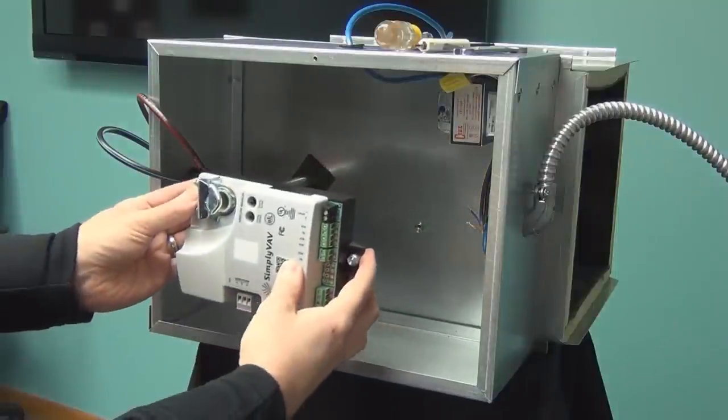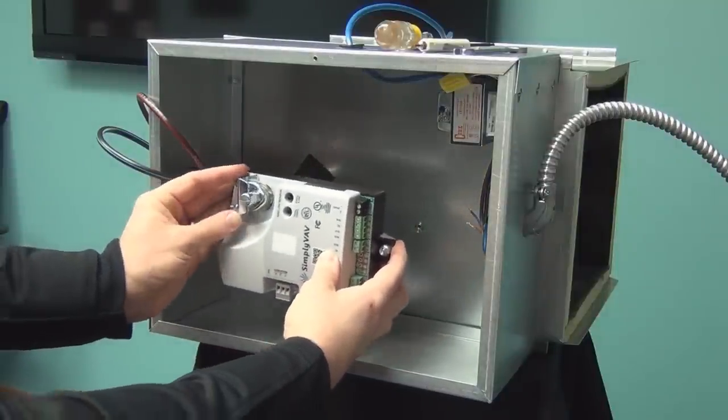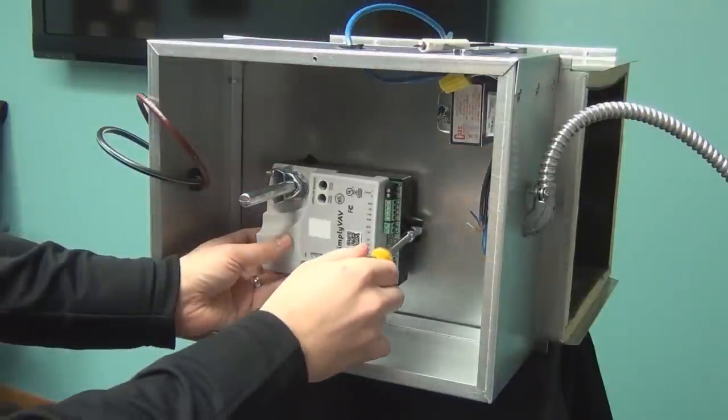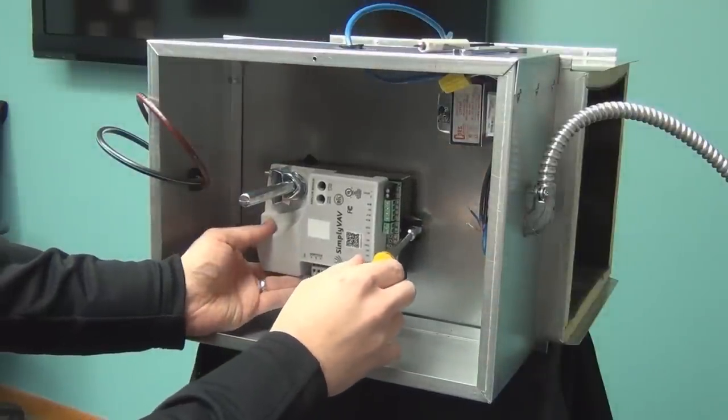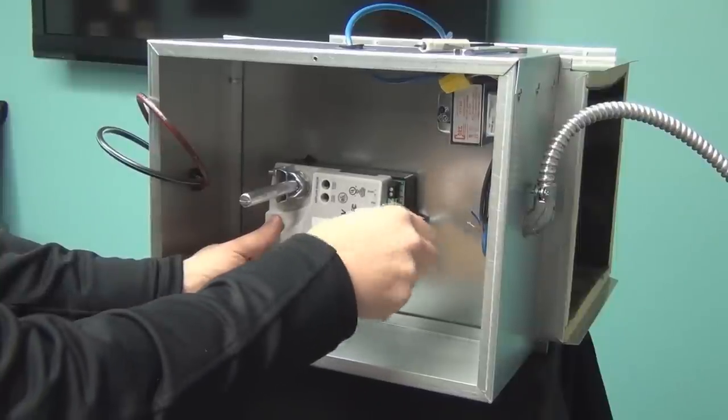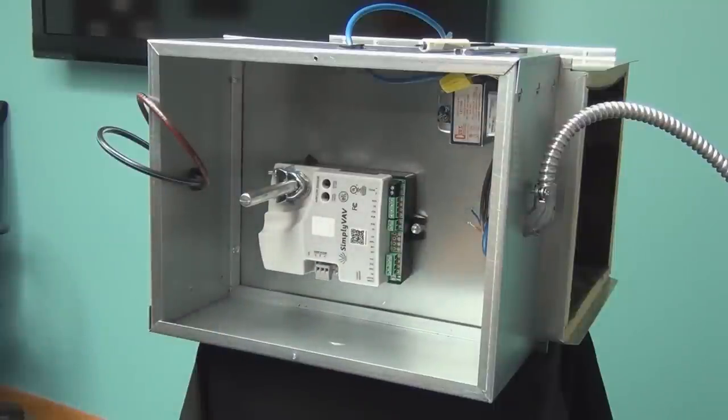Place the controller over the damper shaft. Position the controller so the anti-rotation bushing is free from obstructions and can move freely in the mounting tab. Center the bushing in the slot. Fasten the controller with a number 8 sheet metal screw.